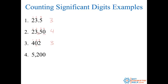How about 5200? The five and the two obviously are significant, but are these trailing zeros? The rule says zeros on the end are not significant unless there's a decimal, and there's no decimal, so these aren't significant — that's only two significant figures. We could write it as 5.2 times 10 to the third and see those zeros are just placeholders. How about 0.030? Zeros on the left are never significant, so we mark those out. The trailing zero is significant because there's a decimal, so this would be two significant figures.